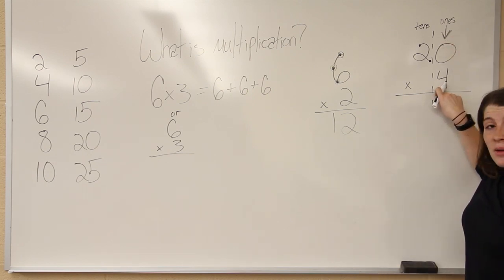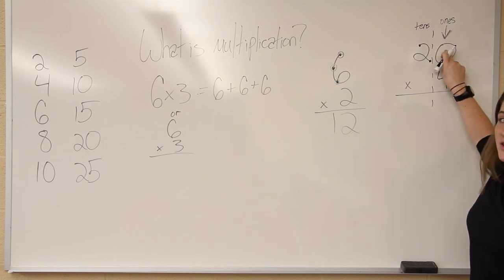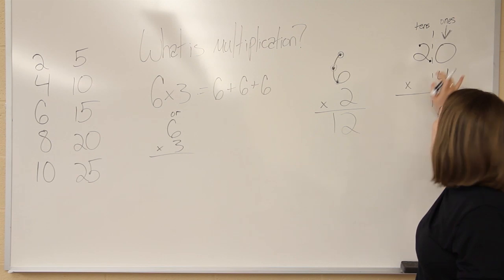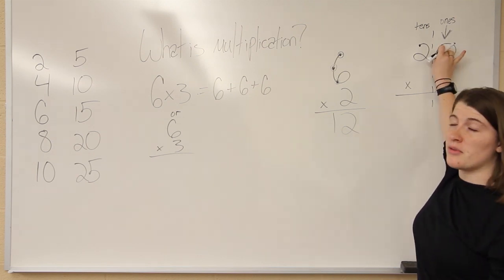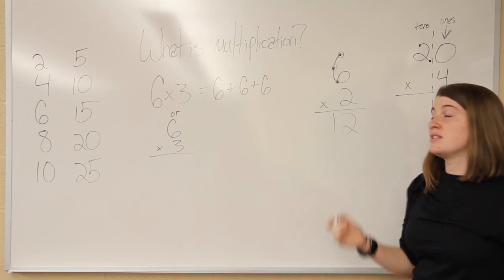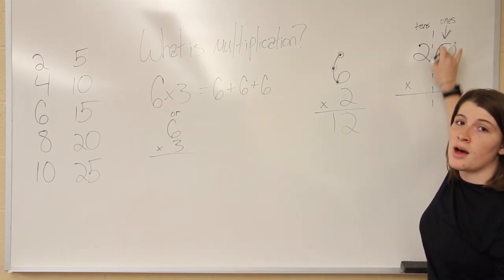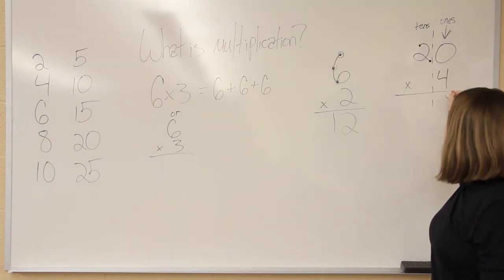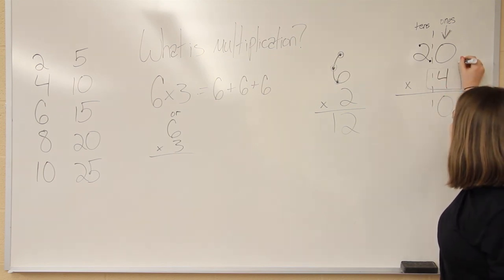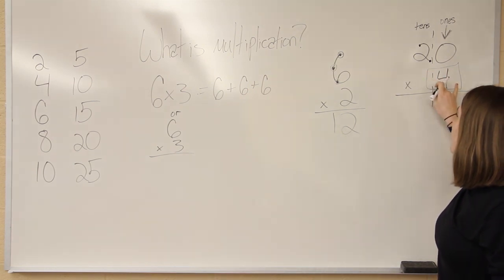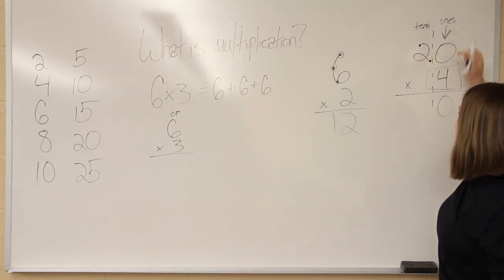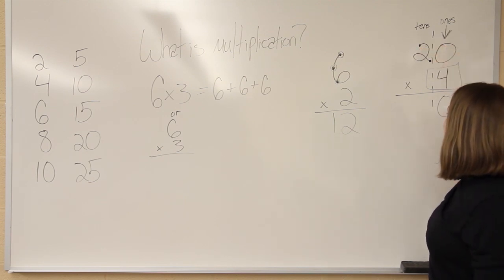They're skip counting by four onto the zero. Now the zero does not have a touch point because it does not have a number value. They would have been taught the properties of the fact that any number times zero is zero. Now moving on, they take this same bottom number and they skip count this number onto the tens place. So then we've got four, eight.